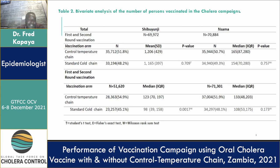In the bivariate analysis, in the first round in both districts, although more people were vaccinated in the CTC arm compared to the standard cold chain, there was no statistically significant difference. However, in the second round, especially in the district called Shibuyunji, there was a statistical difference: more people were vaccinated in the controlled temperature chain — about 55% — compared to the standard cold chain at 45%, with a p-value of 0.017.